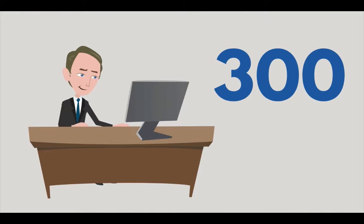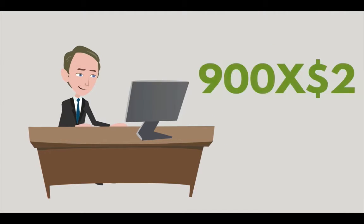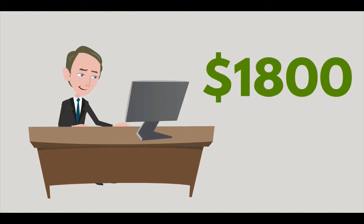For example, let's say you had 300 people on level two, and they all got their three to be free. That would be 900 people times $2, so that would be earning you an extra $1,800 per month.